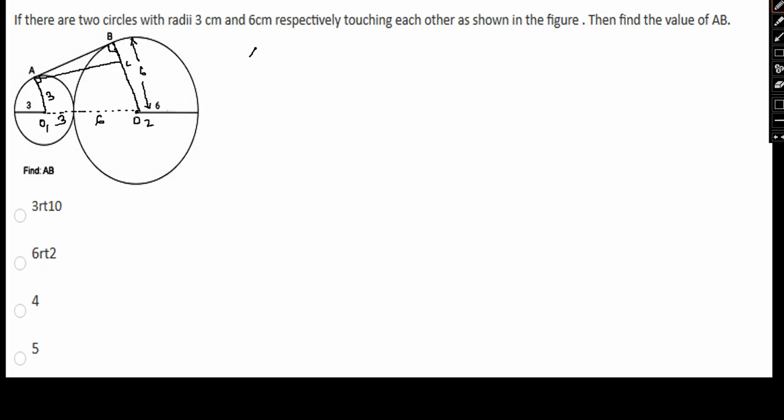We can see triangle ABC is a right angle triangle where angle B is equal to 90 degrees.